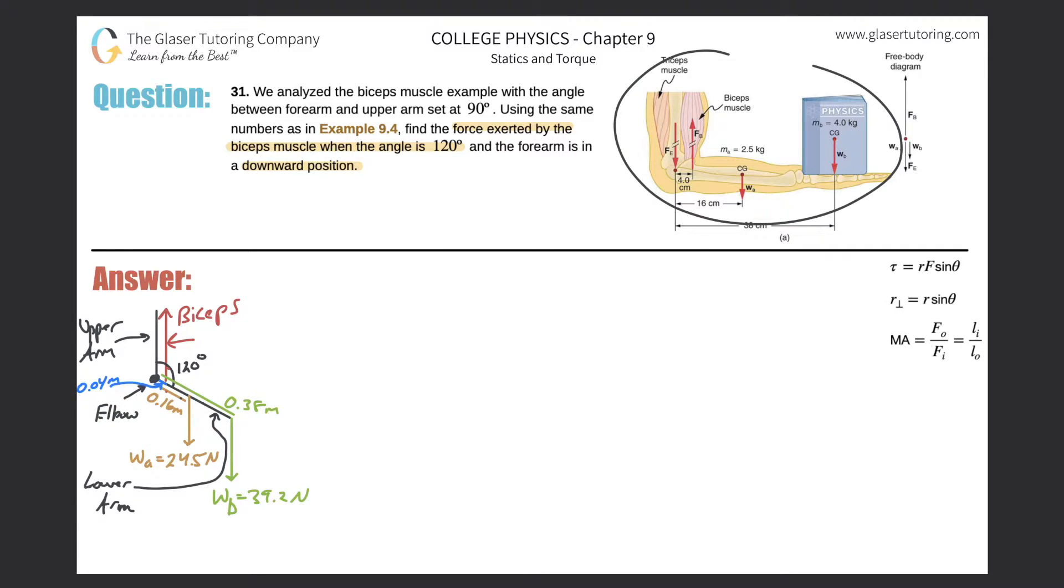Alright, so here's the example, here's the picture from 9.4. The angle between the upper arm and the lower arm is a 90 degree angle there. In this problem they're telling us now the forearm or the lower arm is going to be downward sloping and the angle between these two now the upper and lower is 120 degrees. That's exactly what I have over here in my picture on the left hand side.